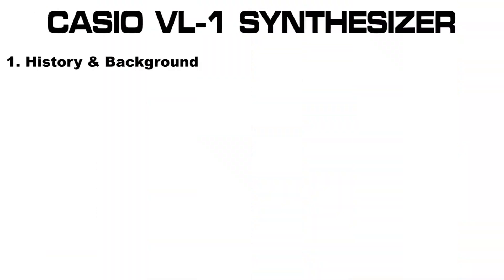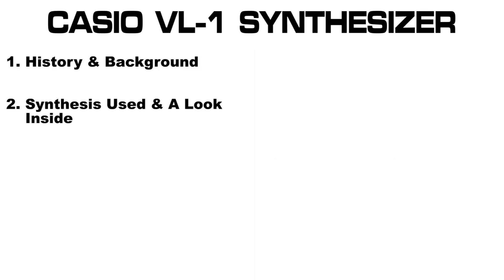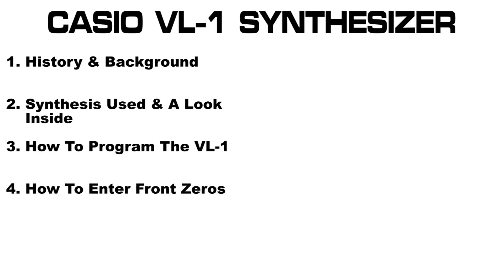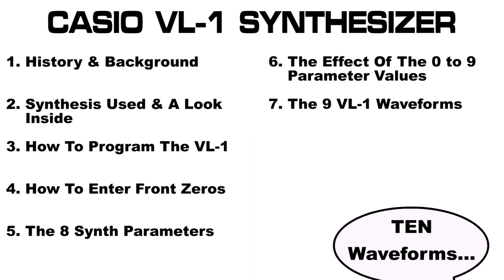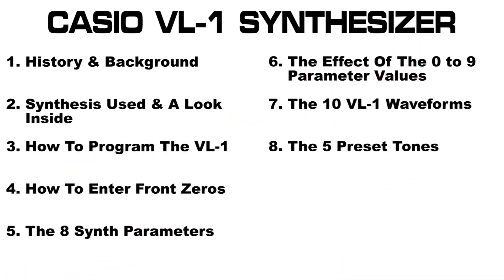We'll take a brief look at the history and background of the VL-1. Attempt to determine the type of synthesis used and have a look inside the VL-1. Demonstrate how to program the numbers into the ADSR synth section. Explain how to program zeros into the front of the ADSR number string. Examine the 8 synthesizer parameters available. Demonstrate how the 0 to 9 parameter values affect the sound by using visual scopes. Examine and demonstrate the 9 VL-1 waveforms using scopes. Examine the 5 preset tones using scopes. Reveal the undocumented secret LFO. And then we'll finish off with a conclusion.